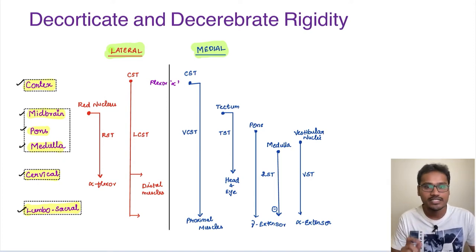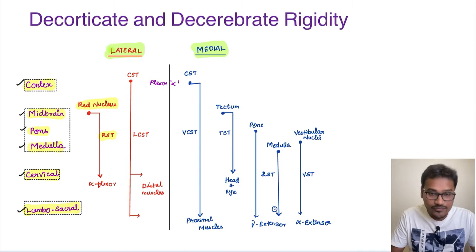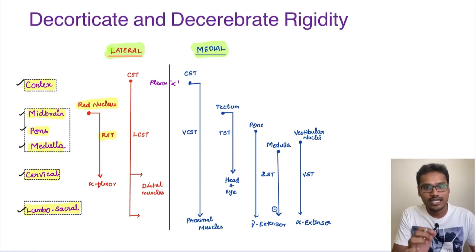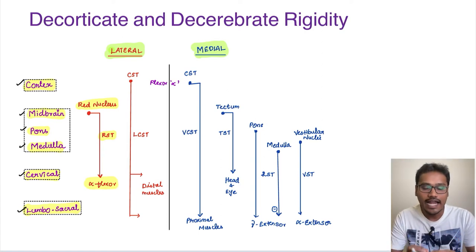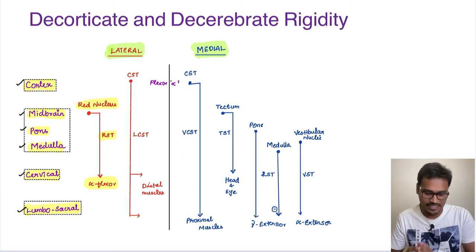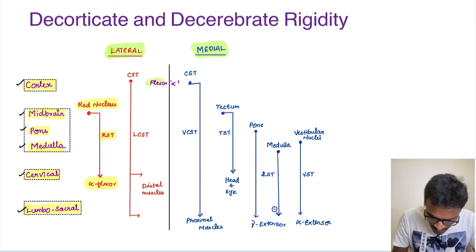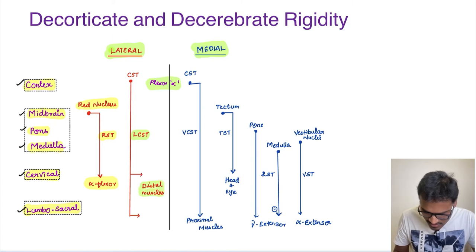There are only two major tracts in the lateral system of pathways. The first is the rubrospinal tract, originating from the red nucleus. This rubrospinal tract goes only till the cervical region, innervating only the upper limb pathway, and gives branches to the alpha flexors. So whenever this pathway is activated, the upper limb is going to contract and flex. The corticospinal tract — both lateral and medial — gives to alpha flexors, with the lateral corticospinal tract for distal fine movement muscles and the medial corticospinal tract for proximal muscles.